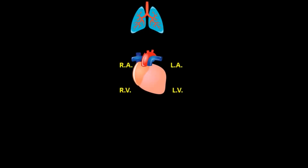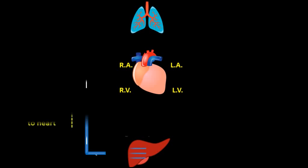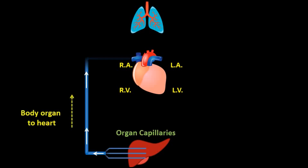This is the systemic representation showing the human lungs, the human heart, and an organ of the body such as the liver. Deoxygenated blood is collected from the body organ to the heart. There is a large network of blood vessels around the organ known as organ capillaries, which are very small.